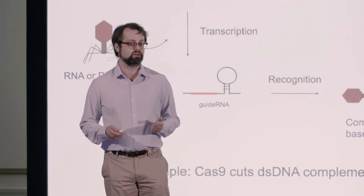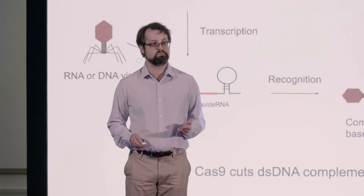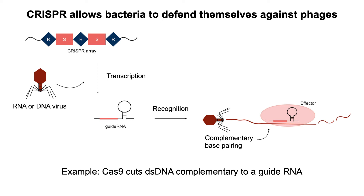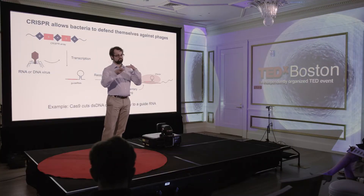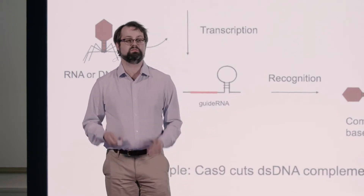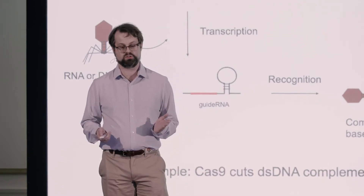CRISPR is a system that bacteria use to defend themselves against bacteriophages. It starts with a CRISPR array that gets transcribed into a guide RNA that can recognize a specific RNA or DNA virus that is infecting the bacterium. It does so by complementary base pairing with the help of an effector protein.